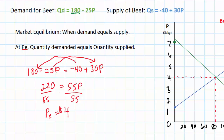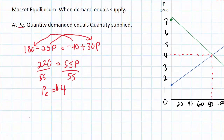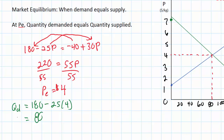All we have left to do is determine the equilibrium quantity. All we need to do is plug the equilibrium price into either the demand or the supply equation. Starting with the demand equation: the quantity demanded at a price of $4 is Qd equals 180 minus 25 times 4, which equals 80. So the quantity demanded at the equilibrium price is 80 kg.